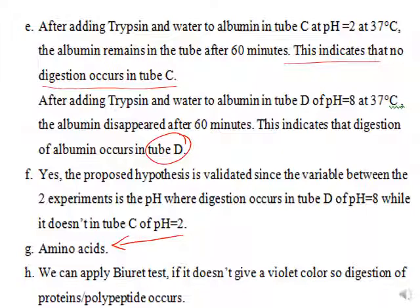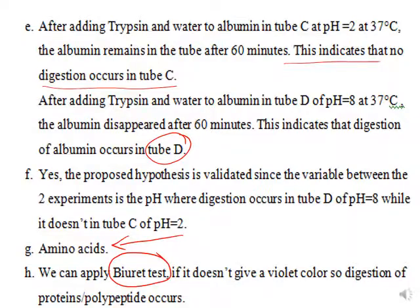The final product is amino acids. To determine if there is digestion of proteins, we can apply the biuret test — if it gives no violet color, that means there is digestion of proteins and/or polypeptides.